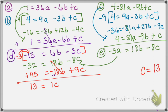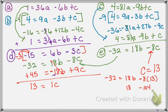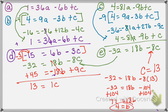Now's the easy part — I can plug back in. I'll go back to equation e and put in 13 where c is to find b. So negative 32 equals 18b minus 8 times 13. That's negative 104, so I have negative 32 equals 18b minus 104. Adding 104 to both sides: 72 equals 18b. Dividing by 18, I get b equals 4.